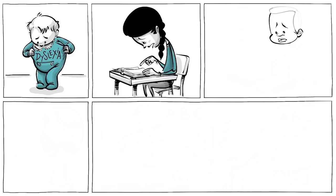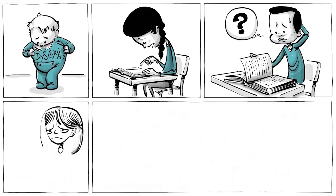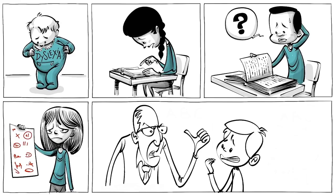Around 5-10% of all children are born with dyslexia. In school they tend to read slowly, have difficulty understanding simple texts, or make a lot of spelling mistakes when writing.